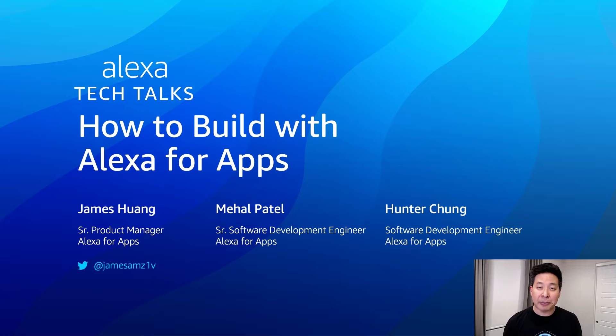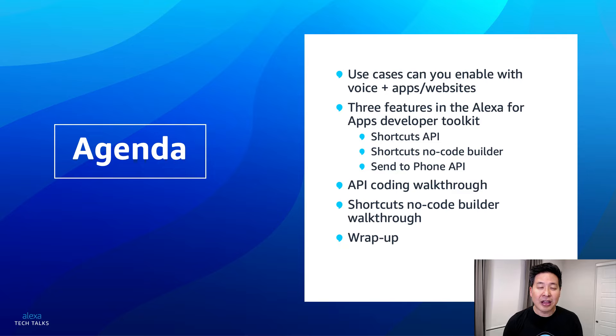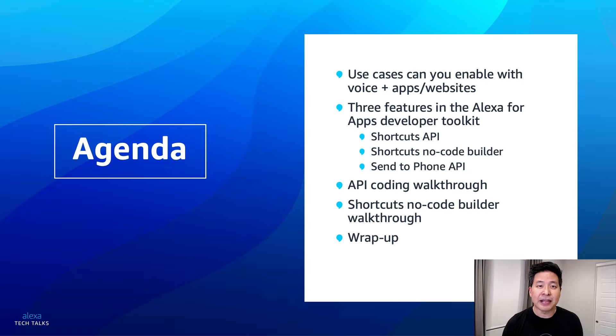Hi everyone, thanks so much for joining us for today's Tech Talk, How to Build with Alexa for Apps. I'm James Huang, a Senior Product Manager with Alexa for Apps. I'll be joined later today by a couple of our lead engineers, Mahal Patel and Hunter Chung. Today we'll cover the kinds of voice plus app use cases that you can enable with three developer tools: the shortcuts API, the shortcuts no code builder, and the Send a Phone API. Mahal will take us through a code walkthrough with our V2 API, and then Hunter will walk us through the no code builder.